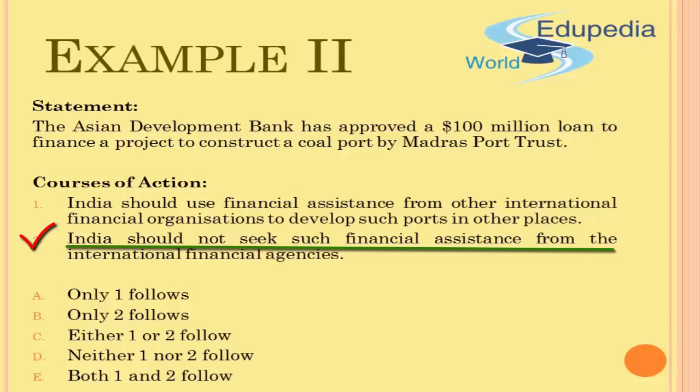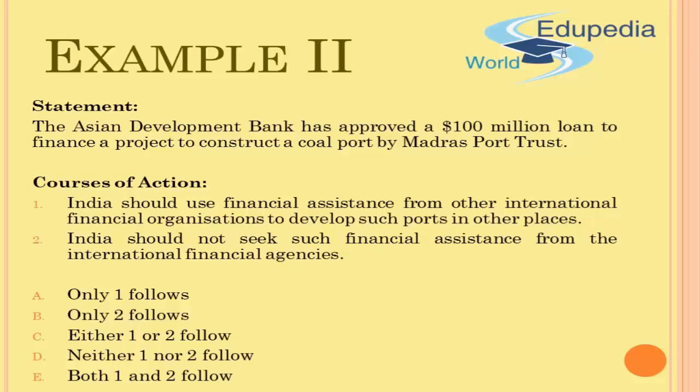The second course of action says India should not seek such financial assistance from international financial agencies. This course of action is not backed by any reason — it's a mere statement without proper cause-and-effect reasoning. Any good course of action should always be backed by reason; if it is not, then it is not a good course of action.